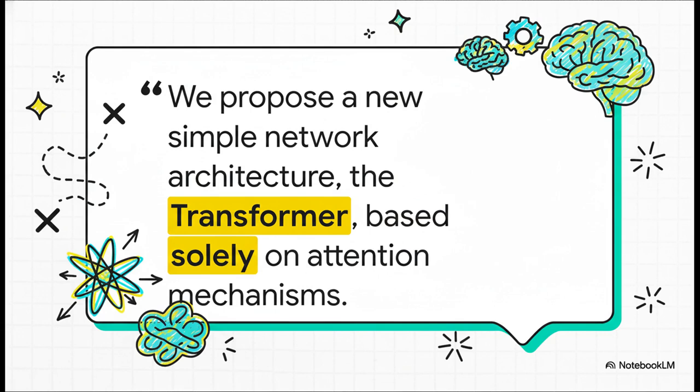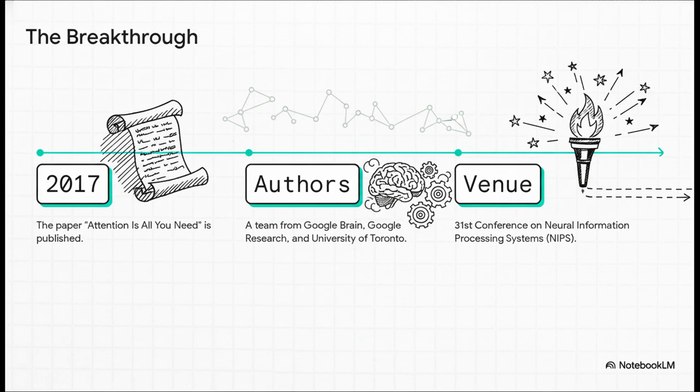No more one-at-a-time processing. Instead, it was going to be built entirely on a mechanism called attention. And this wasn't just some vague idea. It was a real paper published by researchers from Google and the University of Toronto, and it was presented at the NIPS conference, which is a huge deal in AI research. This was basically the starting pistol for the modern AI race we're in today.